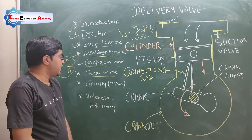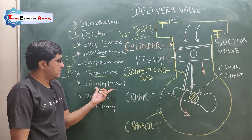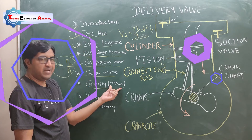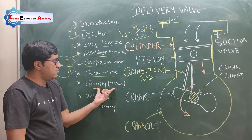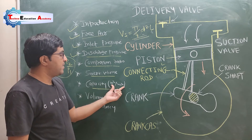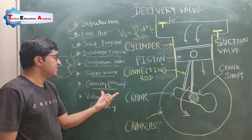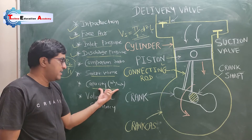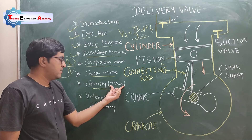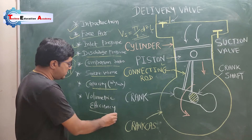The next term is capacity of the compressor. Capacity is measured in m³ per minute. It is the volume of air delivered by the compressor per minute, and it is called compressor capacity.